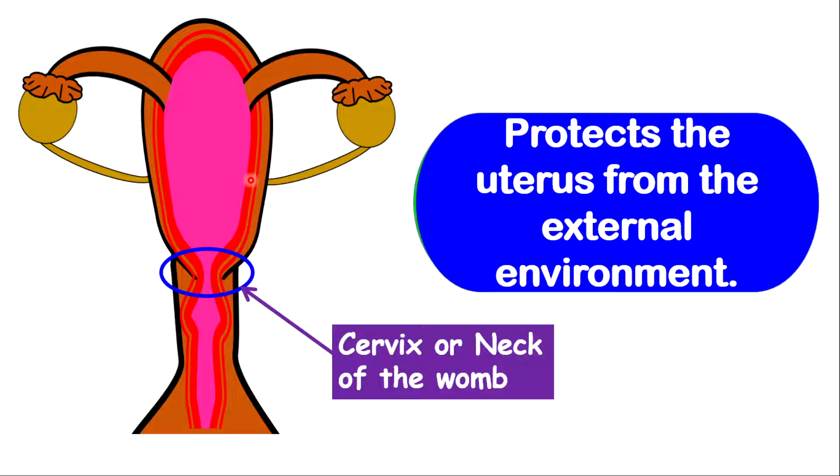The cervix also plays a protective role in that it protects the uterus from the external environment. In fact, during pregnancy, there is what they call a mucus plug that is being formed at the cervix. This mucus plug is antibacterial in nature because it prevents bacteria and other foreign objects from entering the uterus, so it protects the developing fetus from any germs and diseases.